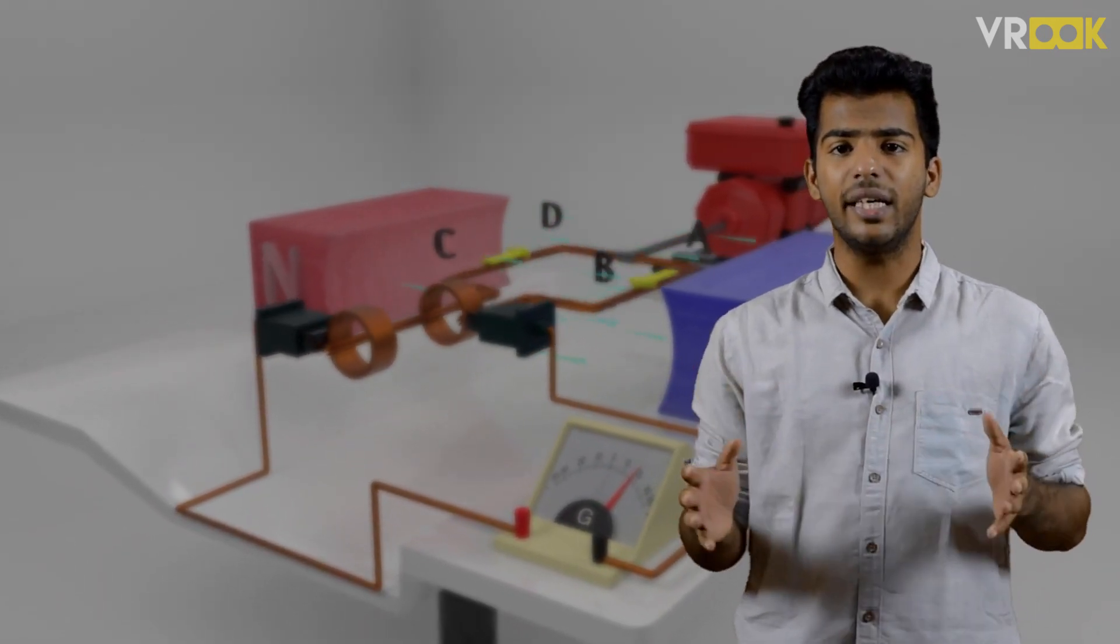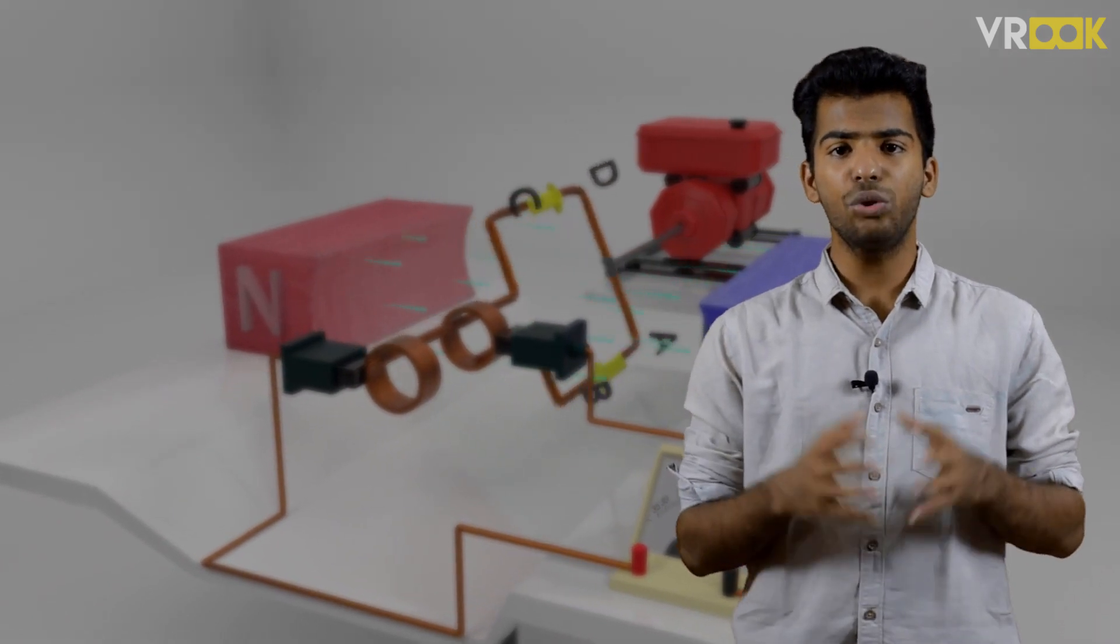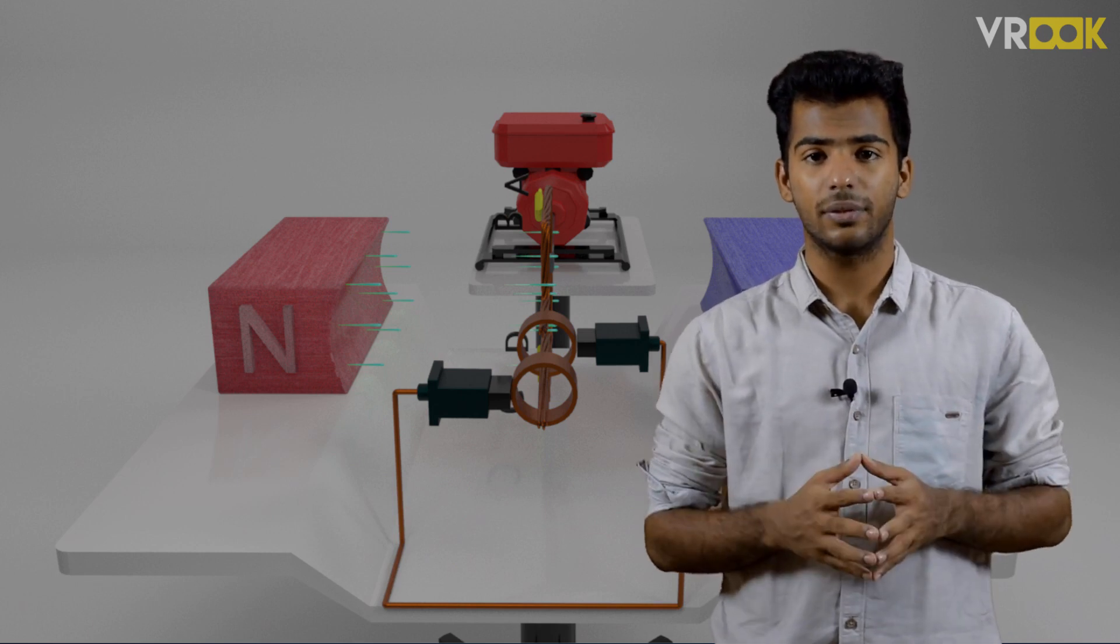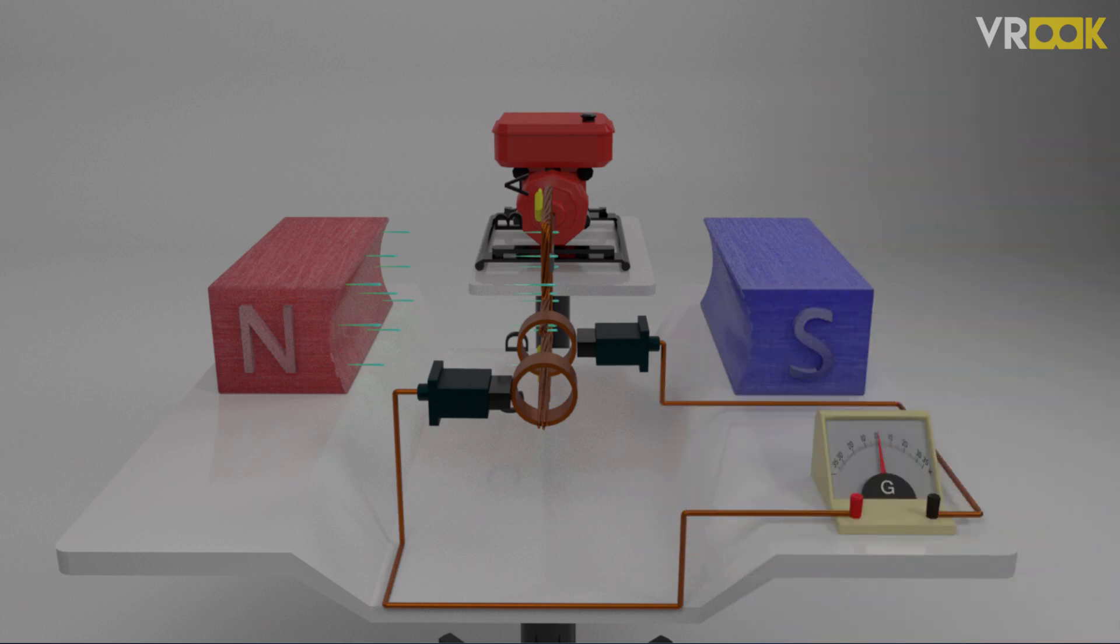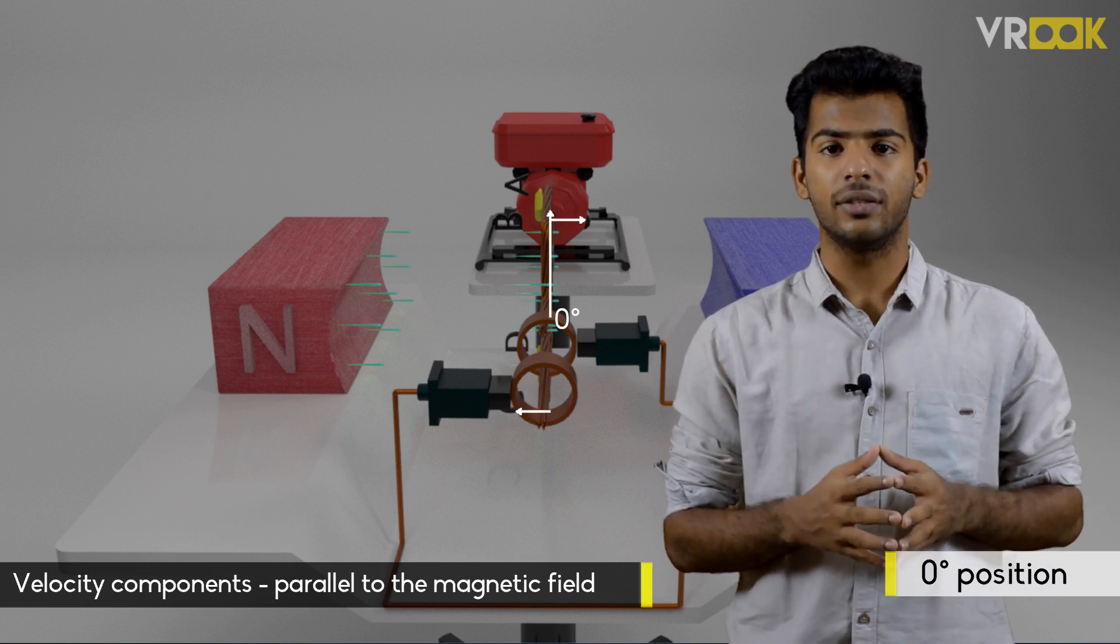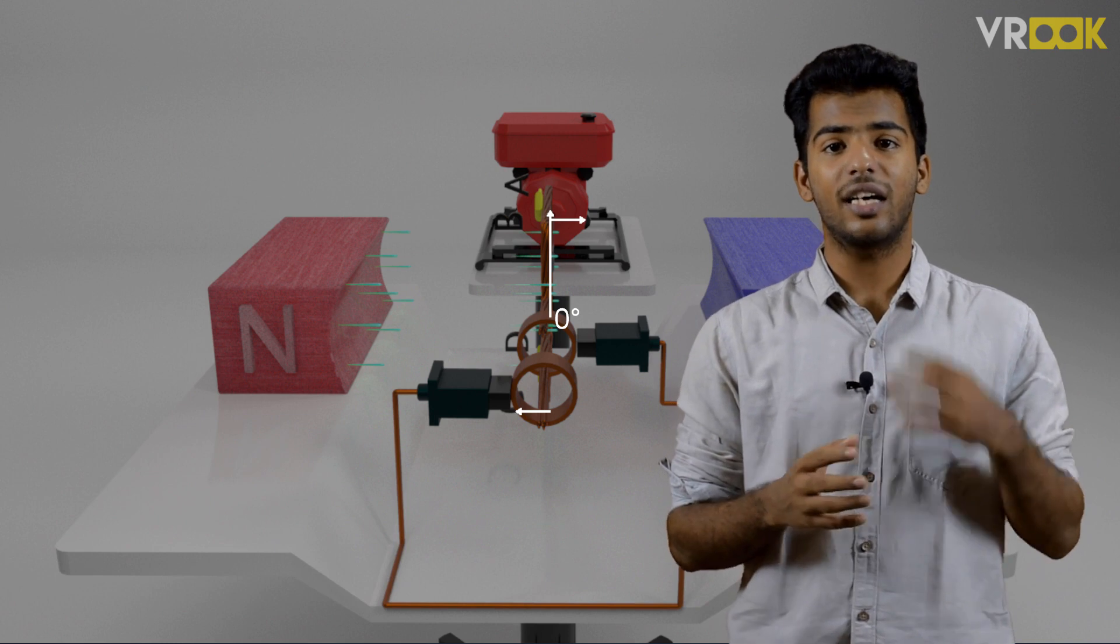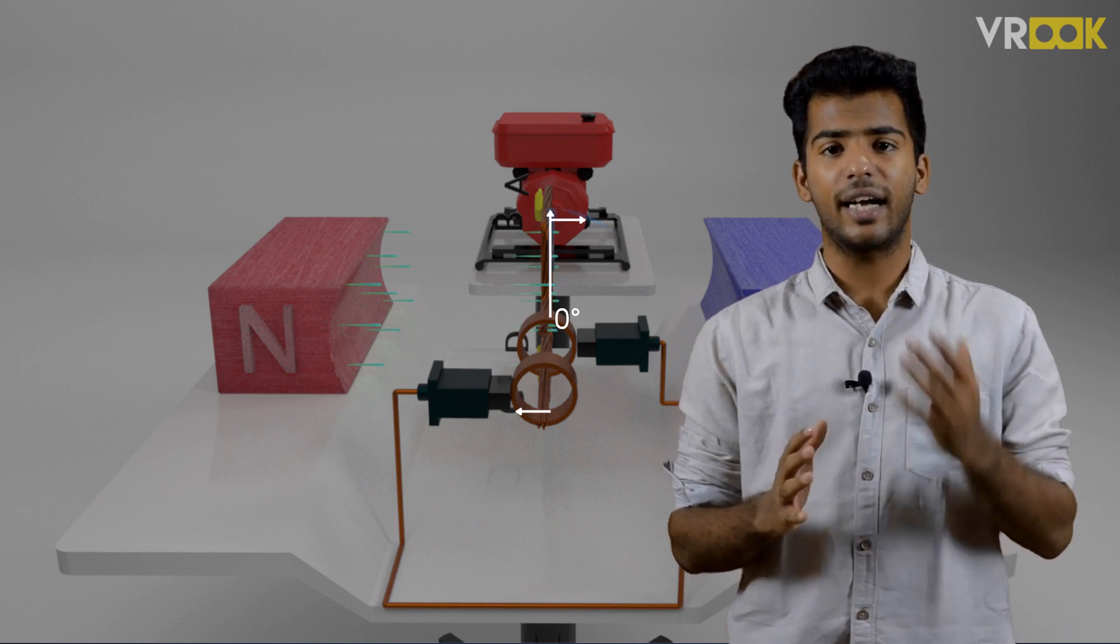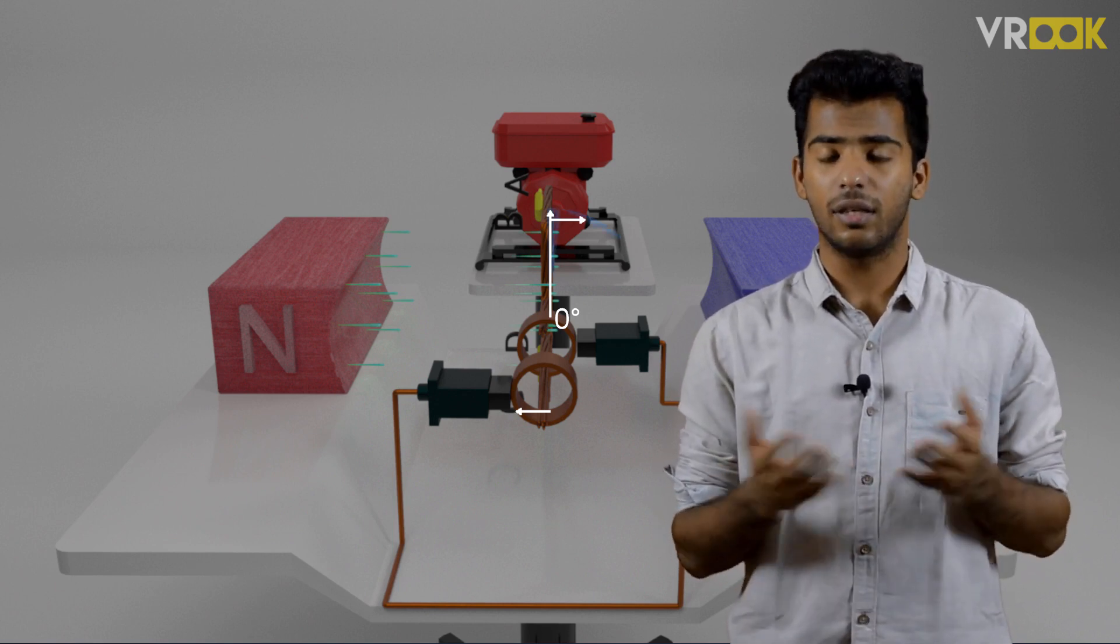When the conductor ABCD rotates in the magnetic field, we should get EMF in these conductors. Let us understand how this happens. At first, the conductor will be at 0 degree position. At this instant, the plane of the conductor is perpendicular to the magnetic field. The velocity components of the conductor AB and CD will be parallel to the magnetic field. Velocity components means the direction in which the conductor will move. At this instant, there won't be any linkage between the conductor and the flux and hence there is no EMF.